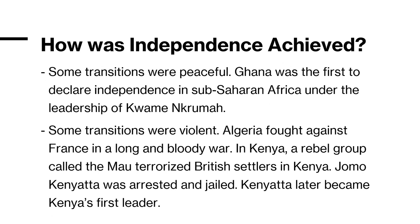We're going to look further at how independence was achieved. The situation in the various African territories in 1945 was strongly conditioned by the different forms of European rule practiced over the past 50 years. The European imperial powers had not governed their colonies along identical lines, and the differences in their approach were to affect the post-war development of their African subjects.